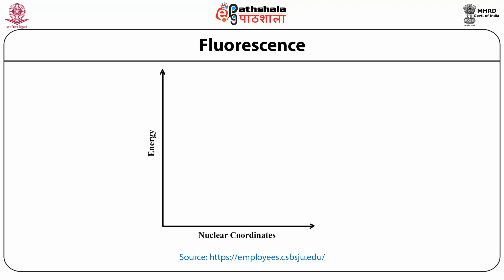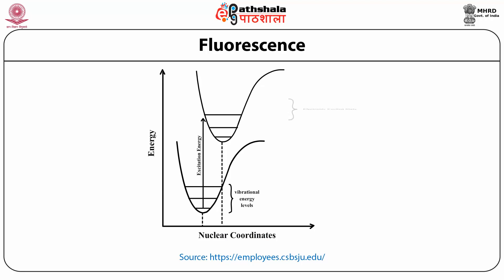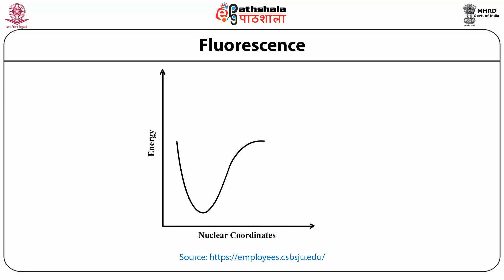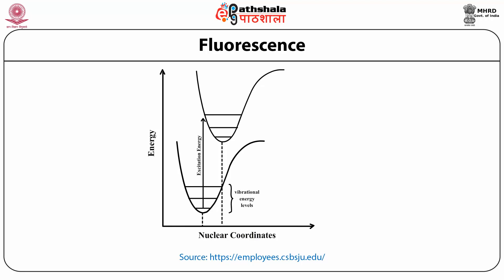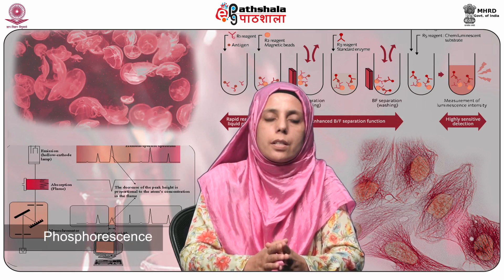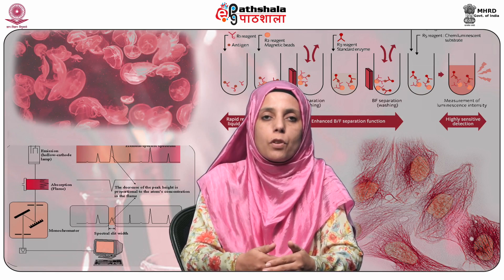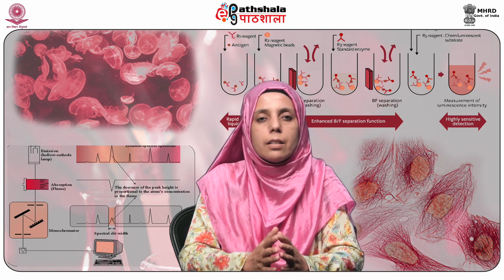A graphical representation shows the x-axis as nuclear coordinates and y-axis as energy. A molecule has electrons in the lowest energy vibrational level, with a definite energy difference between the electronic ground state and electronic excited state. When the molecule is supplied with energy equal to the difference between the two states, it absorbs energy and jumps to the electronic excited state. Fluorescence is a phenomenon where the excess energy absorbed by the molecule is released in the form of light, and this phenomenon stops as soon as the incident radiation is cut off.